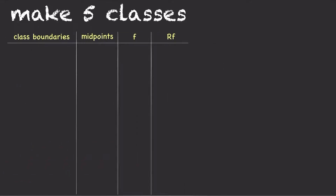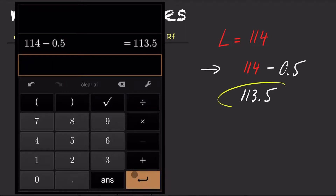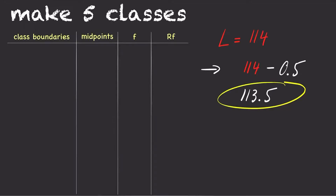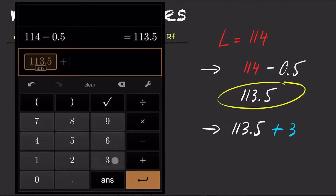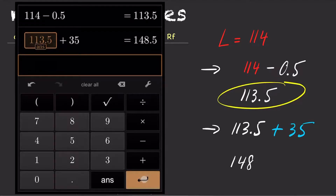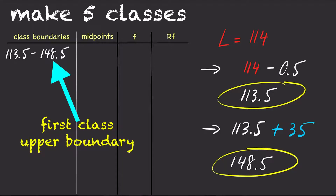To make the five classes, start with the lowest number. In this case, the lowest number is 114. Subtract the lowest number by 0.5; the answer is 113.5. This is our first class lower boundary. Add the lower boundary by the class width, which is 35. So 113.5 plus 35 equals 148.5. This is our first class upper boundary. To recap, our first class begins at 113.5 and goes up to 148.5, where the class width is 35.